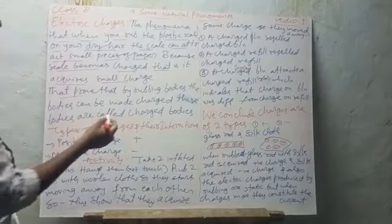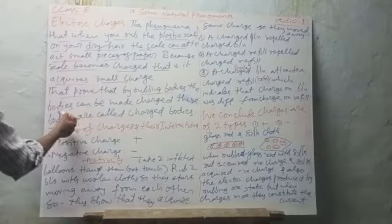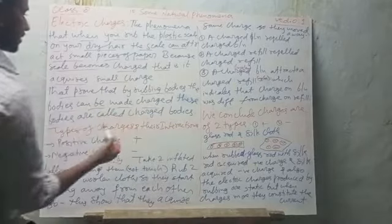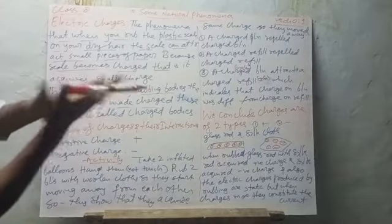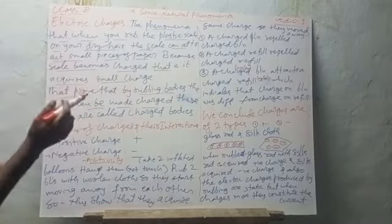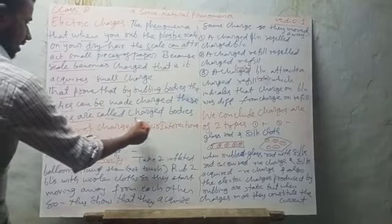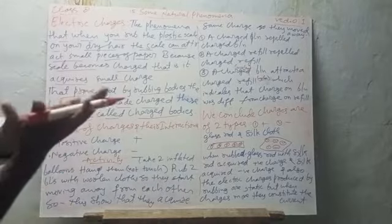By rubbing bodies, the bodies can be made charged. These bodies are called charged bodies — after rubbing, when bodies become charged, they are called charged bodies.